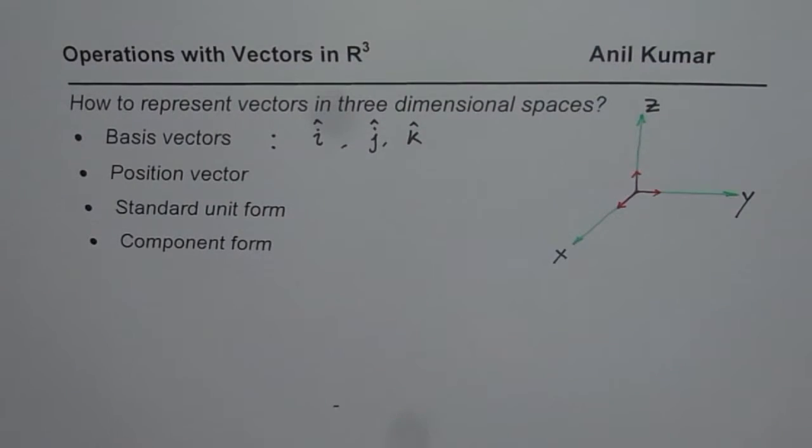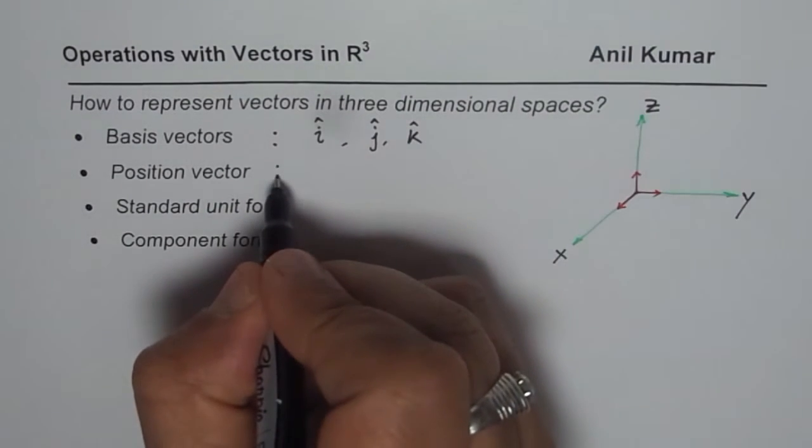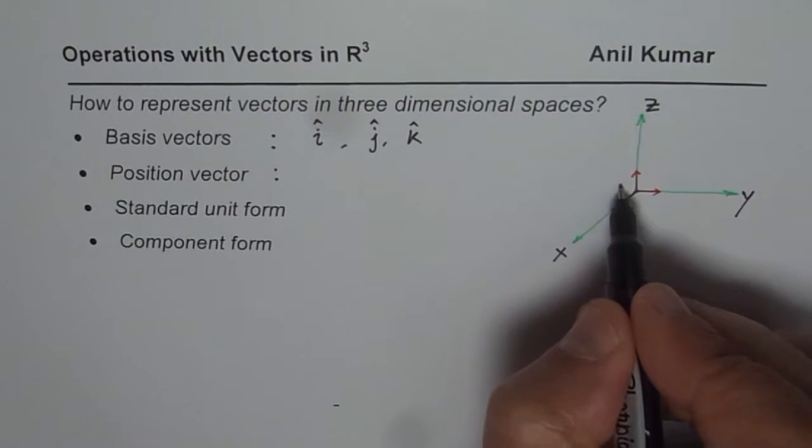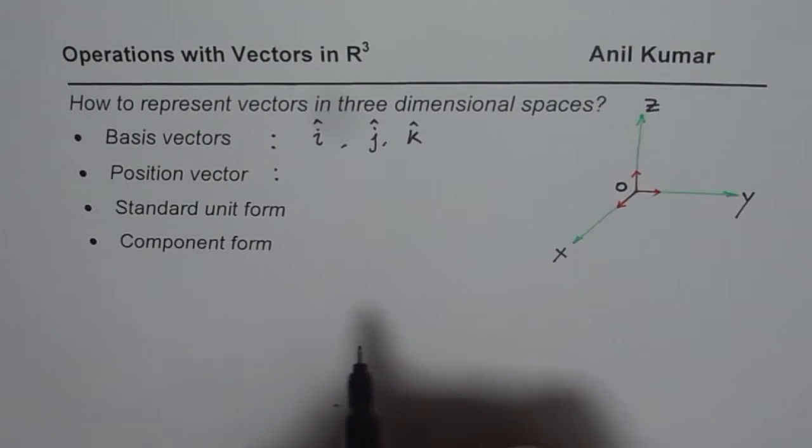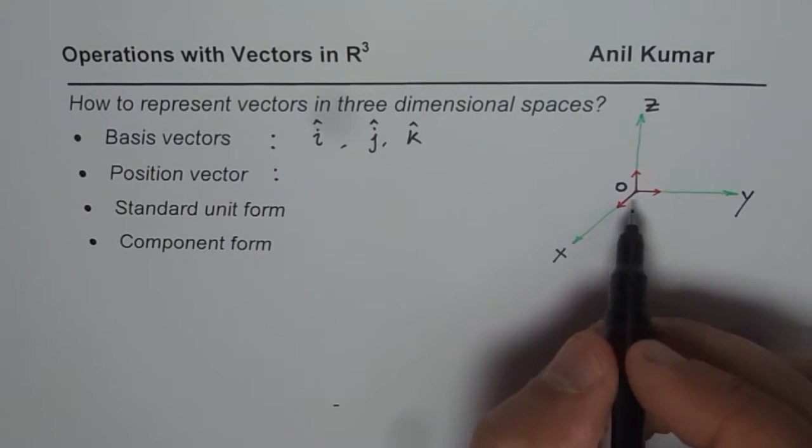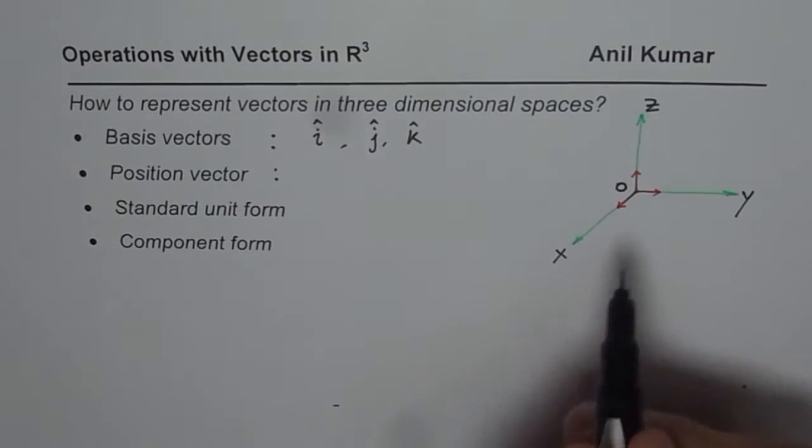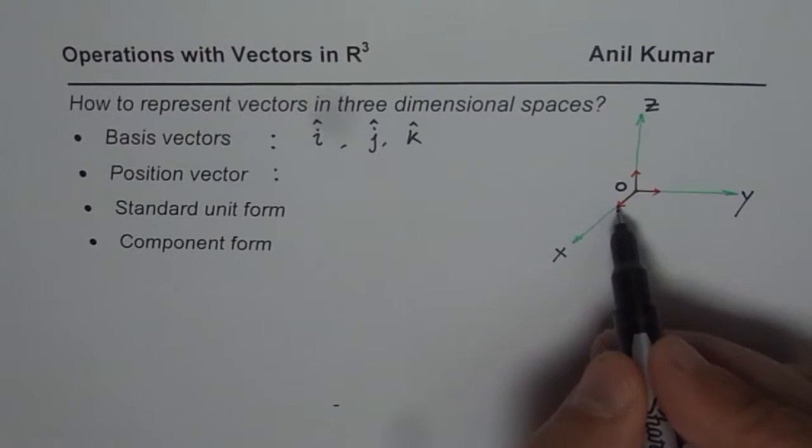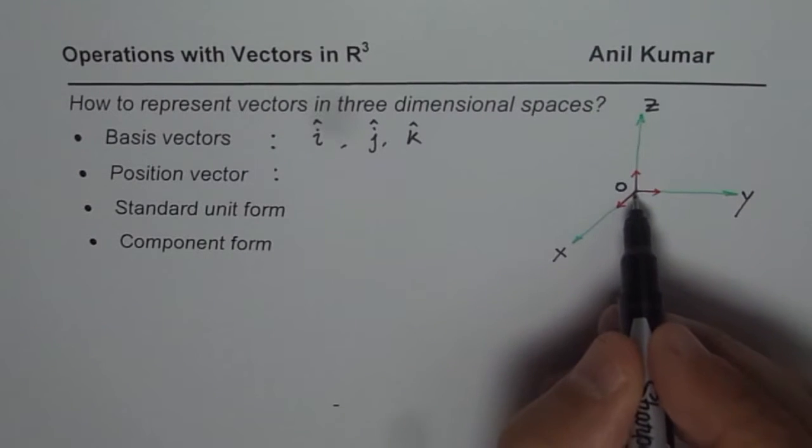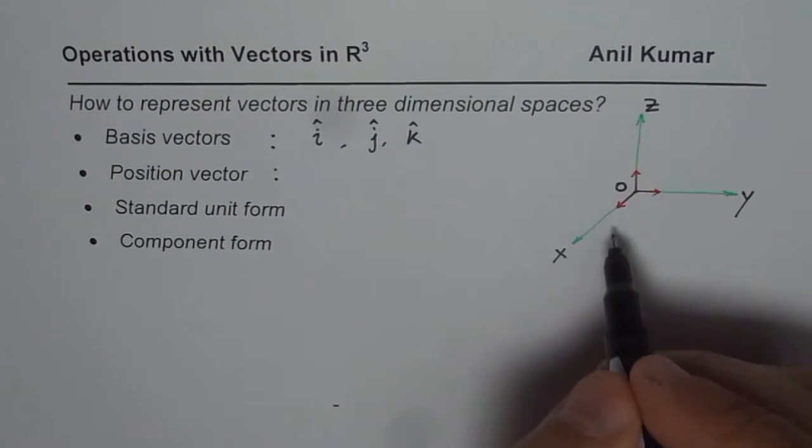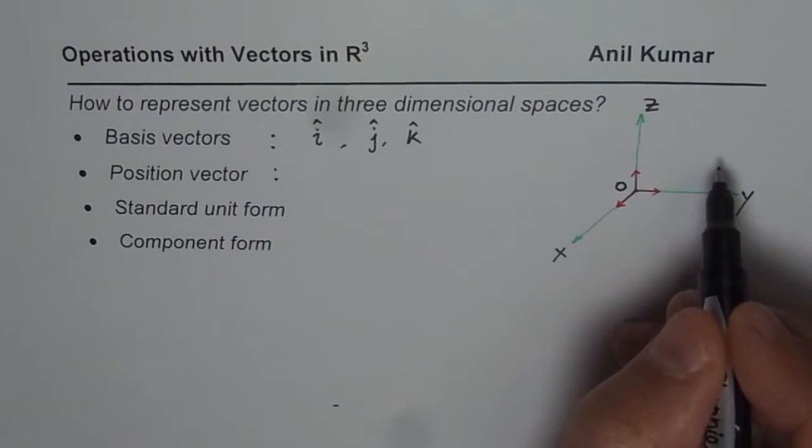Now what is a position vector? Here we have origin. This point right at the center is the origin with coordinate points 0, 0, 0. That means along i, j, and K, it is 0 units. Position vector is any point in the space from origin.